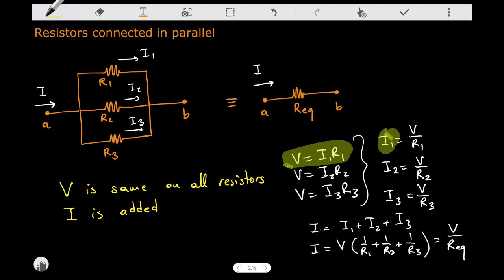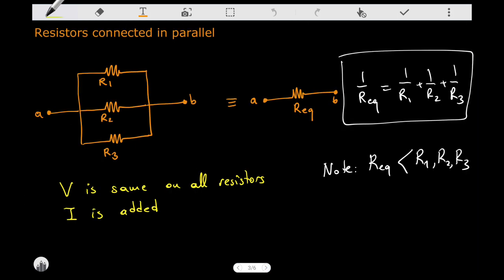When I write down these and find the currents and then find the total current, we can then express the total current in terms of the potential drop across the whole element divided by some number, and that number is the equivalent resistance. So you can then see that in that case, the reciprocal of the equivalent resistance is equal to the sum of the reciprocals of the individual resistances.